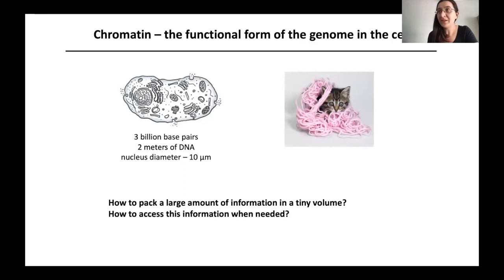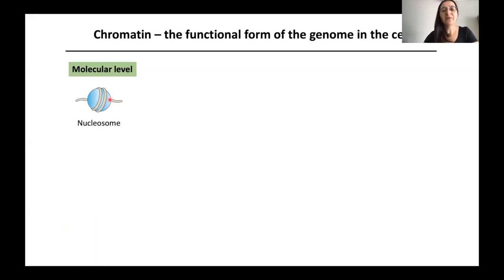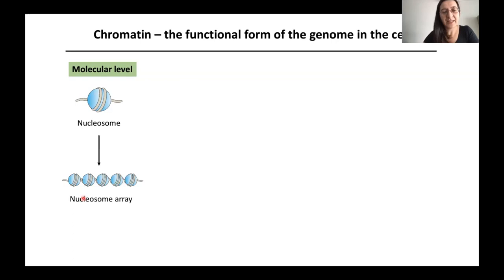Chromatin is the solution to two big problems: how to pack a large amount of information in a tiny volume, and how to access this information on demand. On a molecular level, chromatin consists of structures called nucleosomes — 147 base pairs of DNA wrapped around a protein core of histone proteins. This provides a compaction factor of seven, and nucleosomes can come together in arrays that are more or less compact depending on the context.